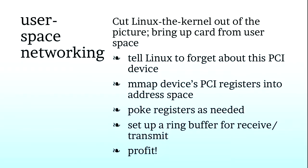To actually reach this performance, we use something called user space networking. The general idea is that we're going to make a network function that doesn't really involve the kernel. We begin by telling Linux to forget about this PCI device, which you can do by writing something to a file in /sys. Then you mmap that PCI device's registers directly into your user space — at that point you're writing a driver in user space. You poke the registers, bring up the card, read the data sheet, set up a ring buffer, and you can pull off the receive ring buffer and send to the transmit ring buffer. That's how people do it these days.